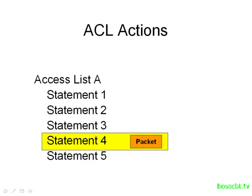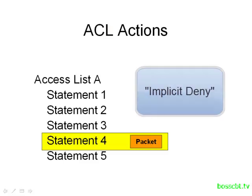There is also one other type of action, commonly referred to as an implicit deny. This action is implied at the end of the Access List. So if a packet makes its way down an Access List and gets to the very end without matching any of the particular statements, that packet is dropped automatically. You won't necessarily see this configured — it's default implied behavior. There is one way to configure an Access List to avoid this default behavior, and we'll cover that later in the configuration tutorials.